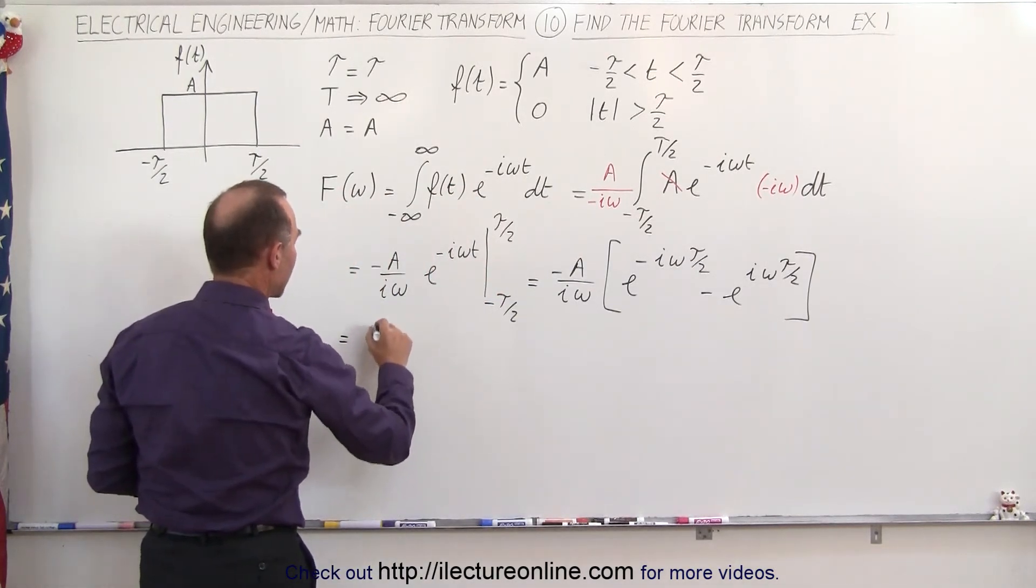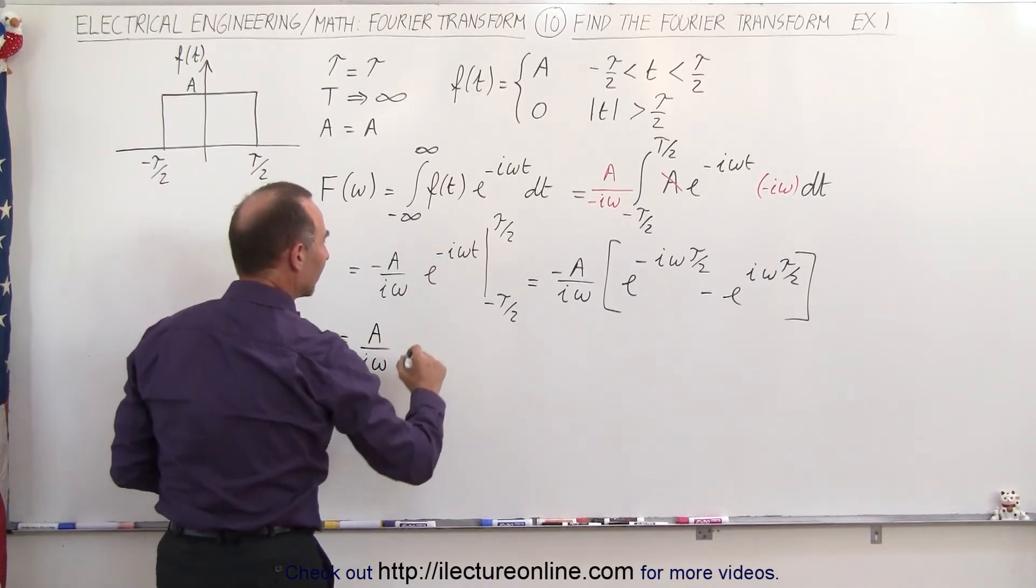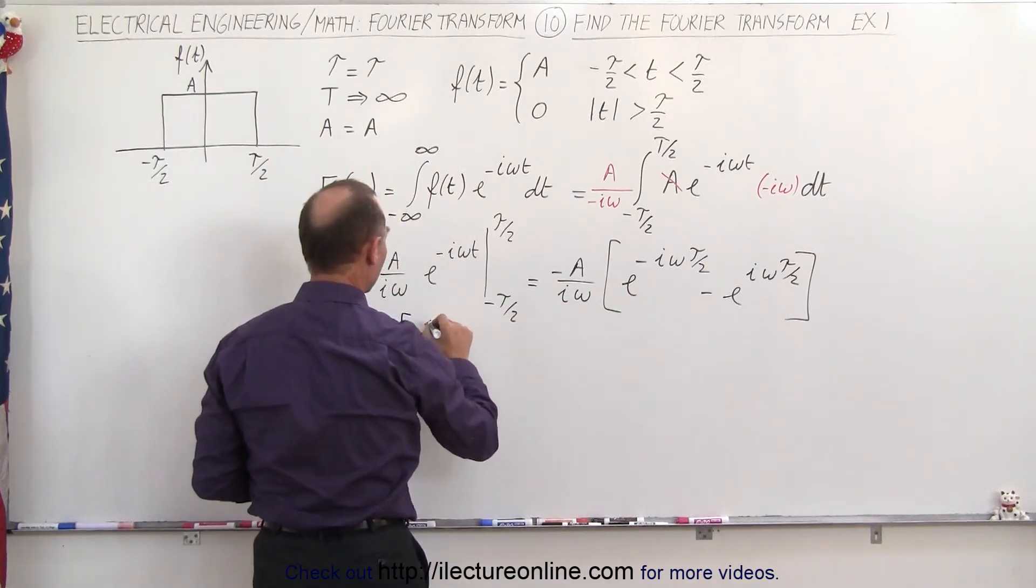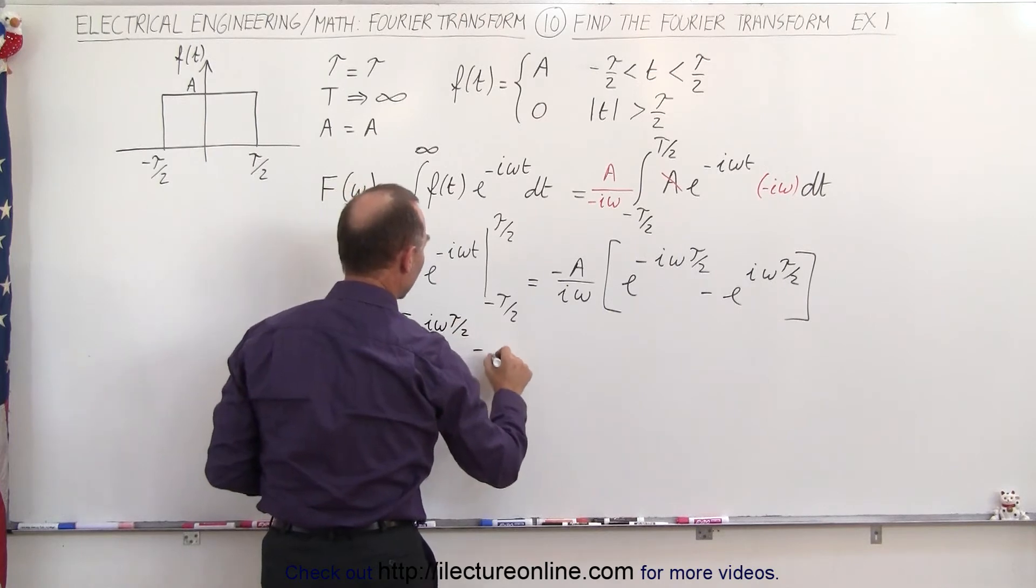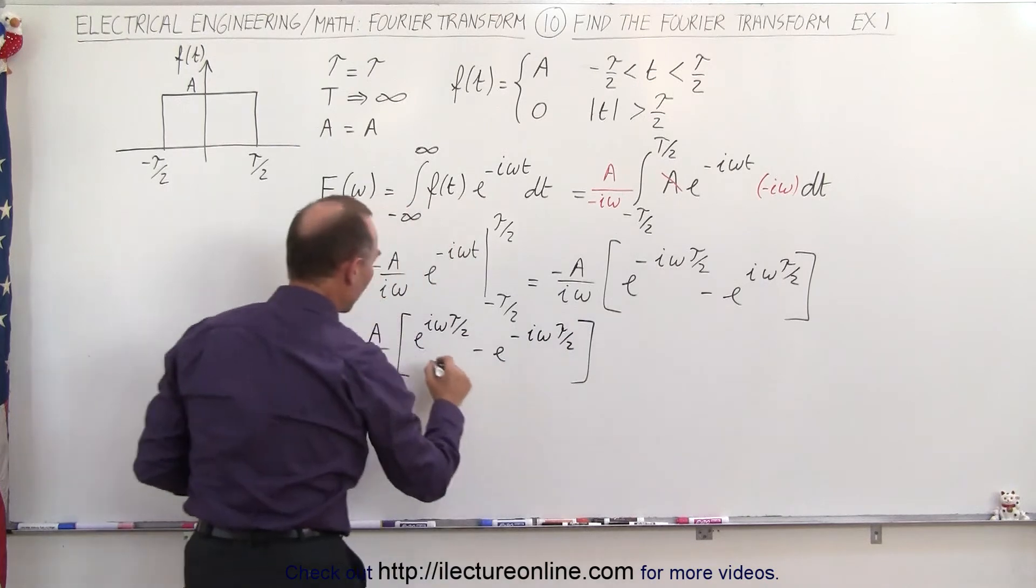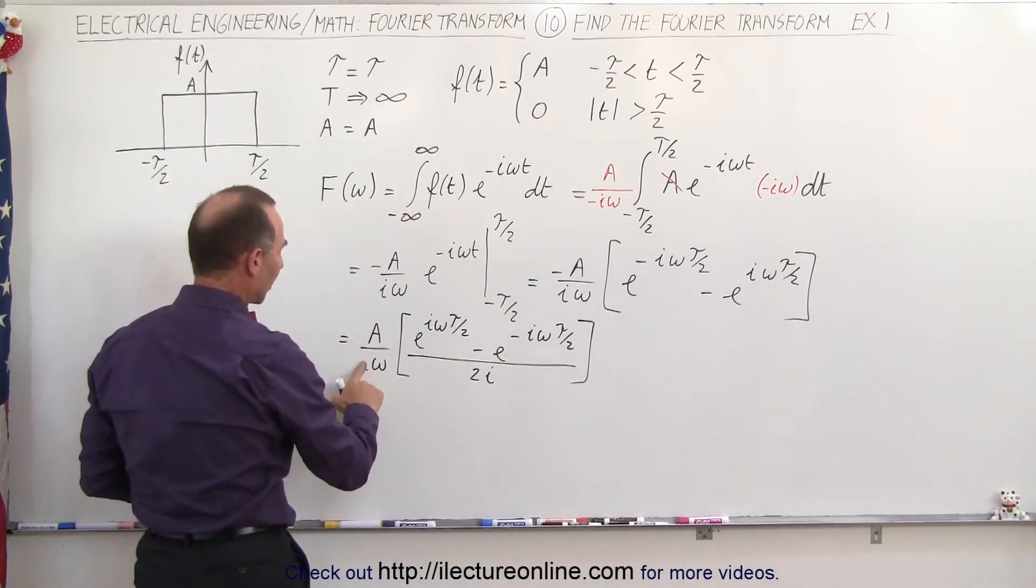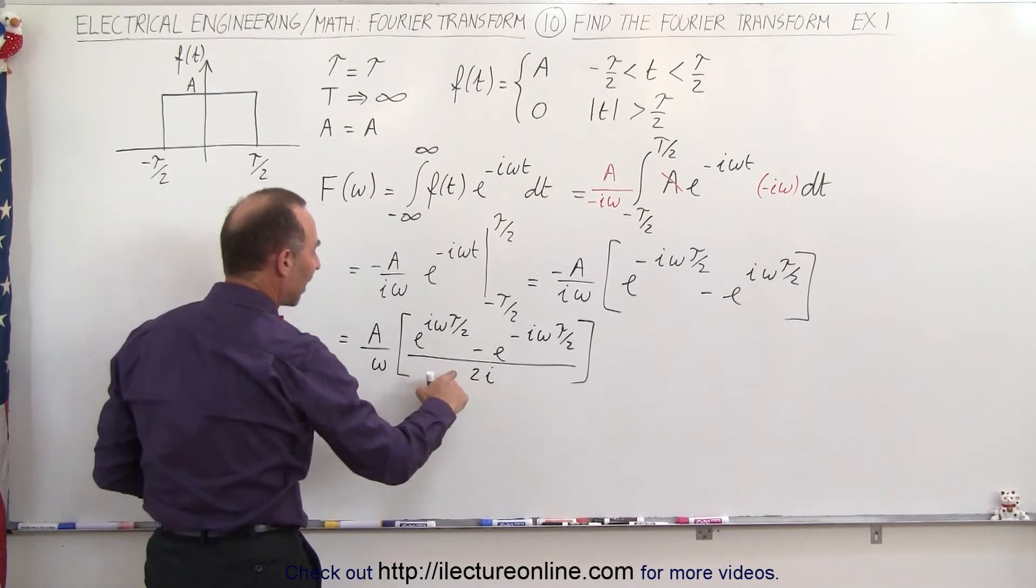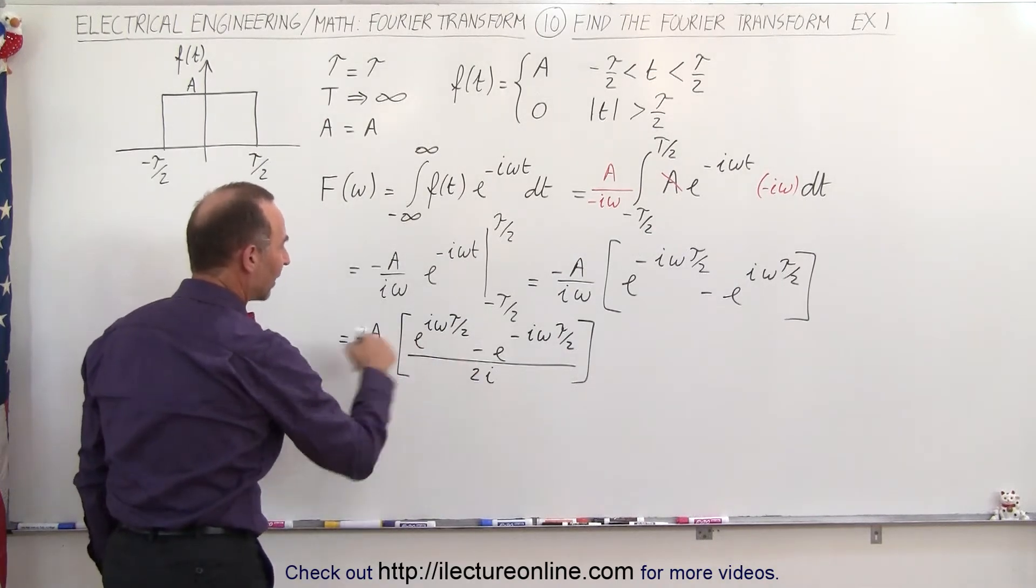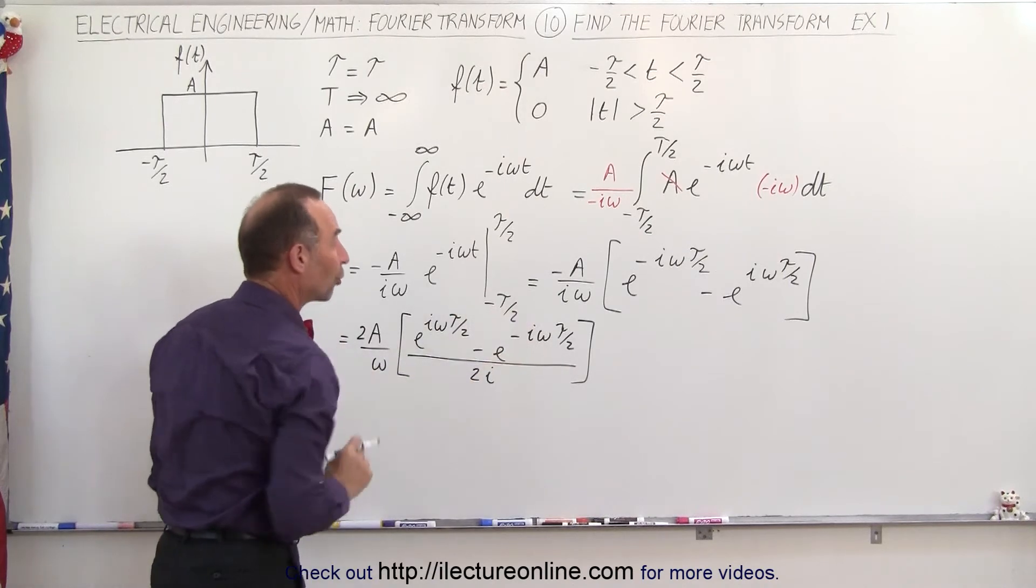So this becomes equal to A divided by i omega times—so move the negative sign in front—I get e to the positive i omega times tau over 2, and then in the bottom here I want a 2i. Well the i comes from here, so I can get rid of this, but since I divide by 2 I must also multiply times 2 so that way I don't add an extra term in there.